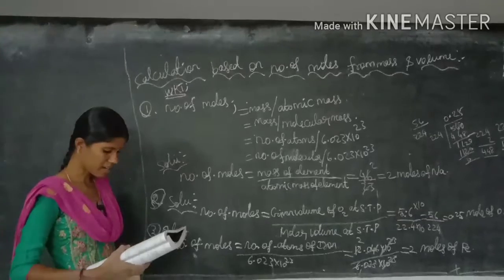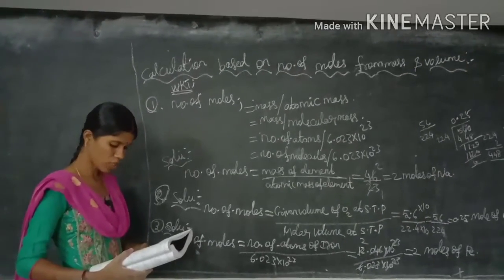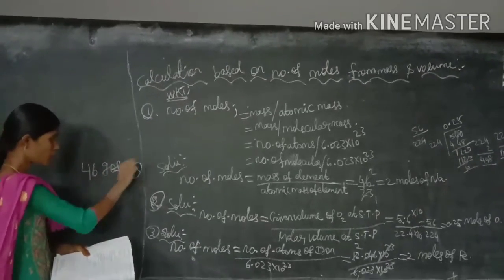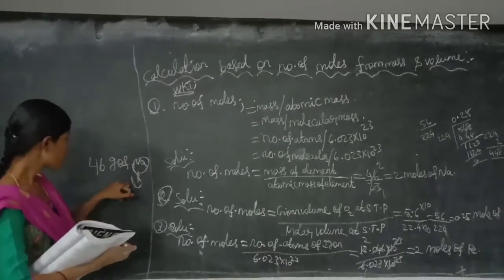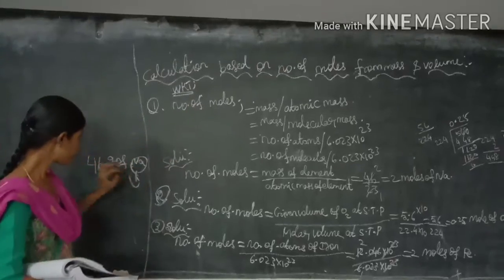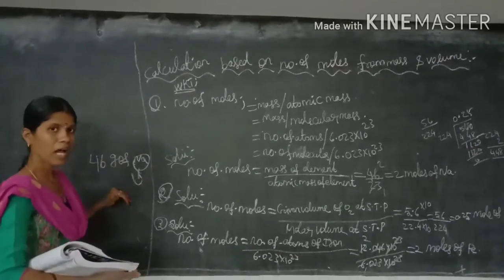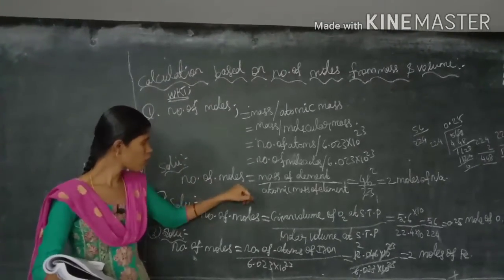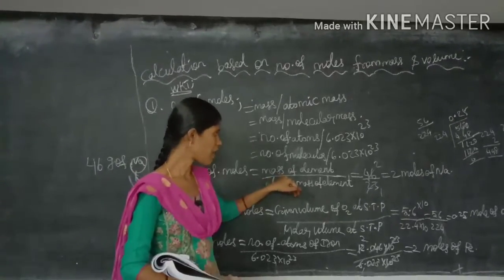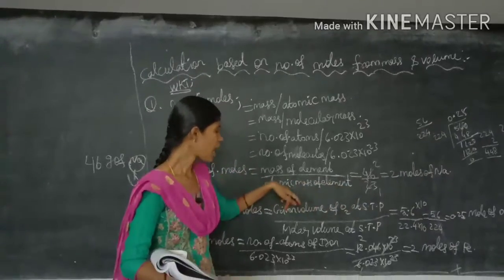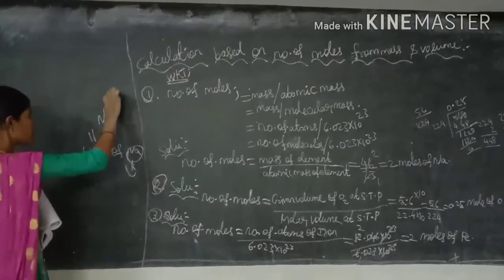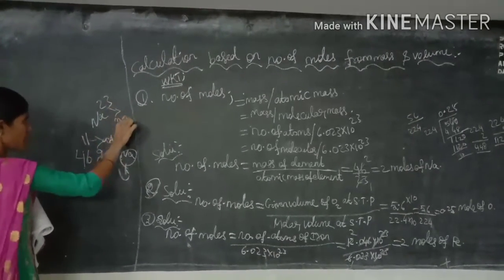Problem 1: Calculate the number of moles in 46 grams of sodium. Sodium is an element, so we use formula 1: number of moles = mass of element divided by atomic mass of element. The mass given is 46 grams. The atomic mass of sodium is 23. Sodium has atomic number 11 and mass number 23. The mass number is also called atomic mass.